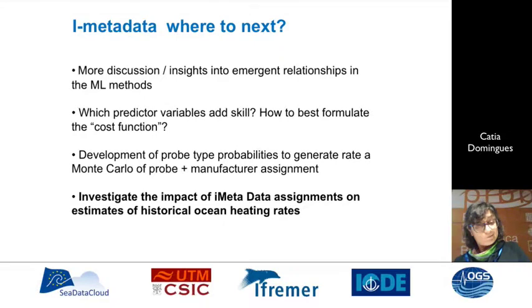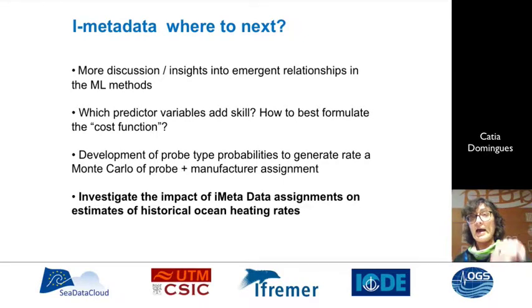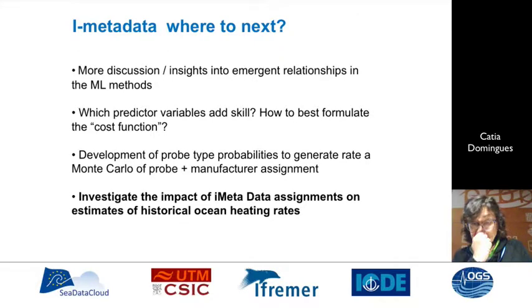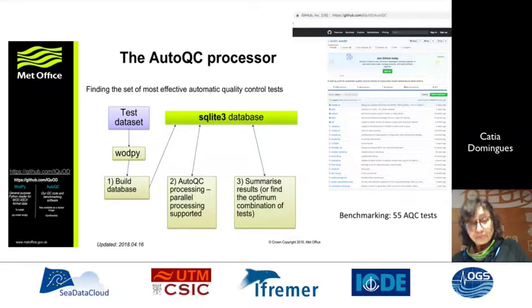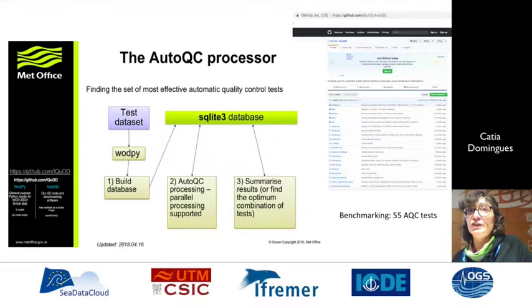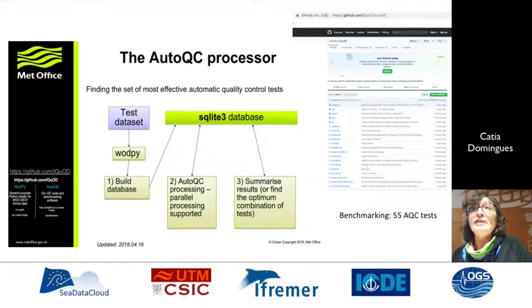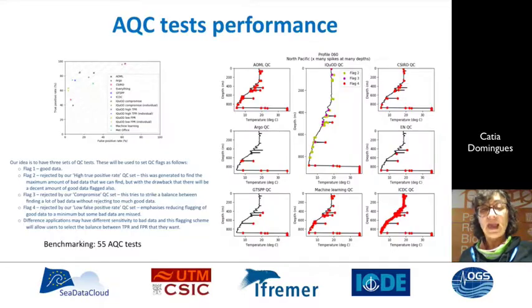They can also generate a probabilistic approach to get a range of possibilities rather than a simple yes or no. They will then test how much difference this makes to global ocean heat content rates. In terms of Auto-QC, Simon Good and Bill Mills have developed a framework and have gathered about 55 different Auto-QC tests so far. If you have automated quality control methods and would like to have them benchmarked with everybody else, please contact us.